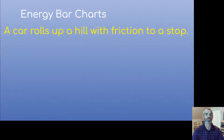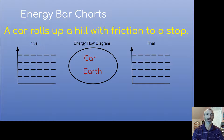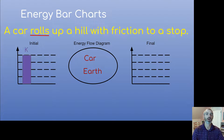Now let's look at a third situation: a car rolling up a hill with friction, and it slows to a stop. We define our system as the car and the earth. There's no spring, so we don't have to worry about that. The car is rolling, so there's kinetic energy. We can define the lowest point — the moment the car starts rolling up the hill — as zero, so there's no gravitational energy. In the flow diagram, the car slows down, so the car is losing energy to the earth. But we also have to take into account friction — the frictional force is provided by the hill, and the car is losing energy to the hill as well. So we draw an arrow from the car to the hill.